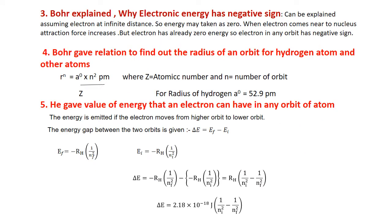Bohr explained why electronic energy has a negative sign. It can be explained by assuming the electron is at an infinite distance from the nucleus. When the electron is at infinite distance, it feels no attraction and no repulsion with the nucleus. Because there is no attraction force, the energy of the electron is taken as zero. When it comes near to the nucleus, it feels an attraction force and energy is released — but since it already had zero energy, it gets a negative sign.